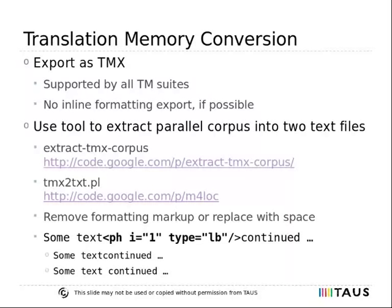In the language industry, resources from previous projects can often be found in translation memory databases. Virtually all translation memory software allows the export of these resources into the industry standard format TMX, which stands for Translation Memory Exchange. TMX allows storing translations for multiple languages along with metadata in an XML format. The TMX standard allows for a lot of flexibility when it comes to encoding formatting information within the translated text. For SMT training data, the formatting should typically be removed, so formatting differences between vendors play a lesser role. Formatting markup can be removed during the export of the TMX files, or the conversion tools can take care of the removal.